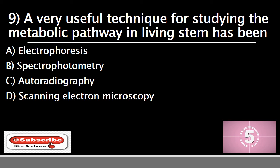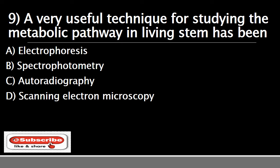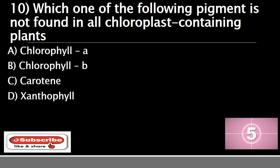Question number nine: a very useful technique for studying the metabolic pathway in living systems has been — your options are A) electrophoresis, B) spectrophotometry, C) autoradiography, or D) scanning electron microscope. The correct answer is C) autoradiography. It is an image on an X-ray film or nuclear emulsion that uses a radioactive source contained within the exposed sample. In vitro it involves the isolation of cellular components such as DNA, RNA, protein, or lipid, followed by labeling with a suitable radioisotope.